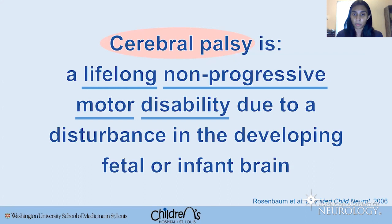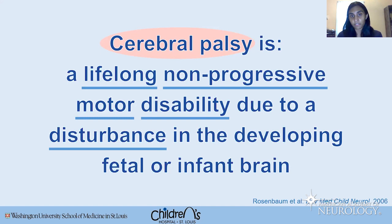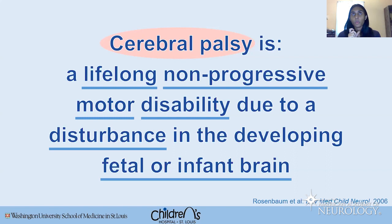Assessing the functional impact of motor symptoms is critical. CP has to be due to a disturbance — a purposefully vague word — in the developing fetal or infant brain. This is vague because CP can be caused by an acquired or inherent issue. Any abnormality in brain development that results in a non-progressive, permanent motor disability can be cerebral palsy. The phrase 'fetal or infant brain' is critical — we focus on disturbances that happen very early in life, many say within the first year.